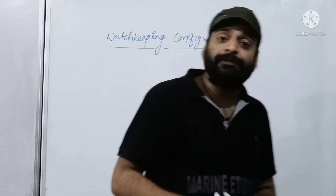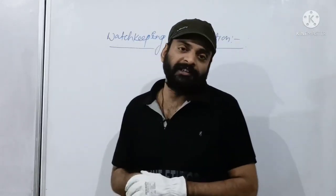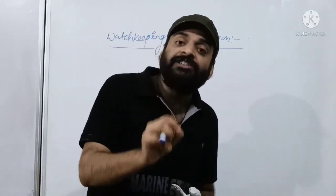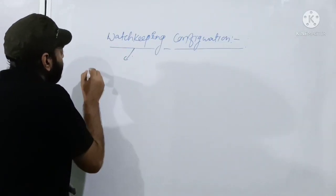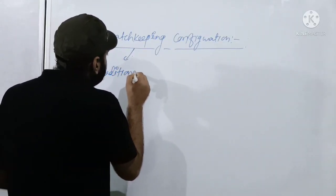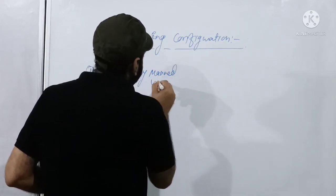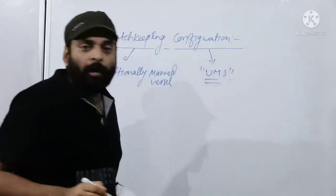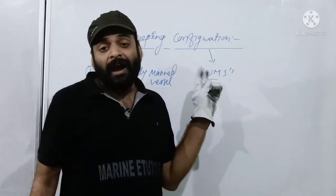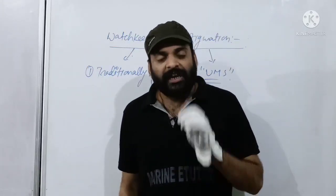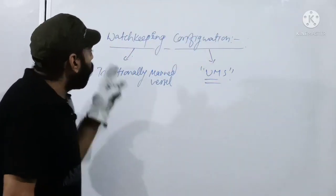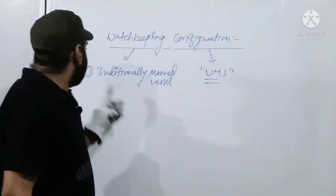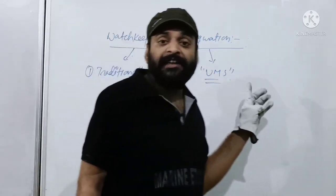Watchkeeping configurations depend on the type of ship. Here I will talk about engine room related configurations. In terms of engine room, there are different configurations. The first one is traditionally manned vessel, and the second one is UMS ship — UMS stands for Unattended Machinery Space. So watchkeeping configuration in terms of engine room is classified into two types: traditionally manned vessel, and unattended machinery space.